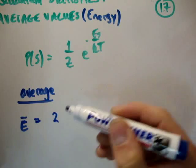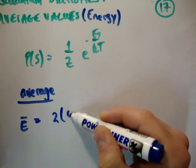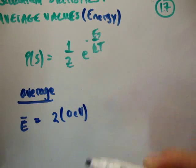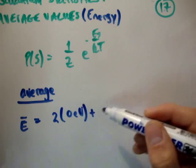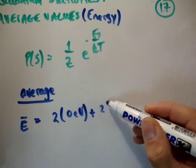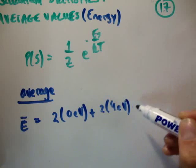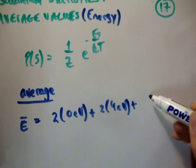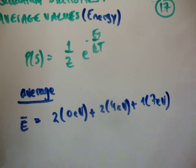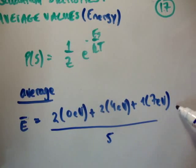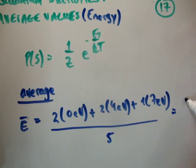Generally what you'll do is, let's say we take the bar on top as average. So let's say we have 2 particles at 0 eV, we have 2 particles at 4 eV, and we have 1 particle at 7 eV. That's the total energy. Now, how we get the average energy is we then divide by the number of particles, which in this case is 5, giving us our average energy.